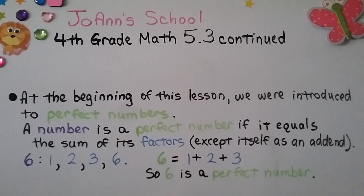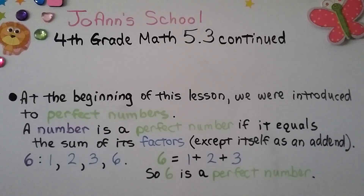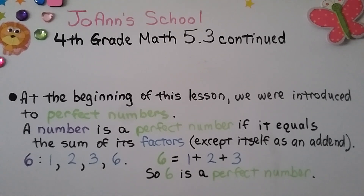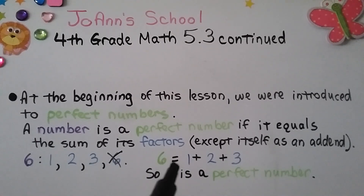Revisiting perfect numbers: a number is perfect if it equals the sum of its factors, excluding itself as an addend. We saw that 6 has factors 1, 2, 3, and 6. Excluding the 6 itself, we add 1+2+3=6, which equals 6. So 6 is a perfect number.